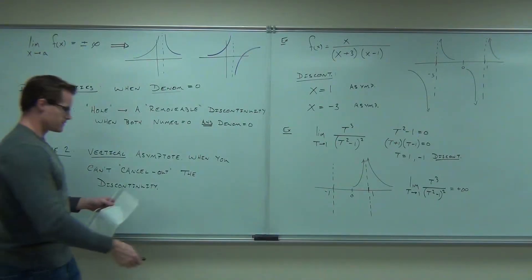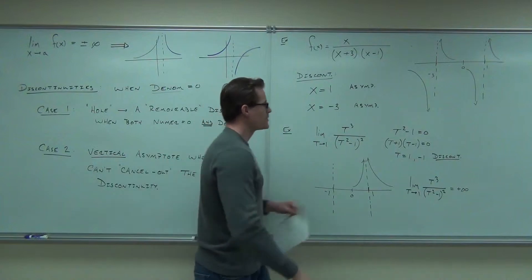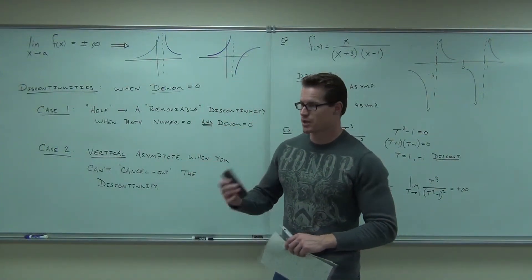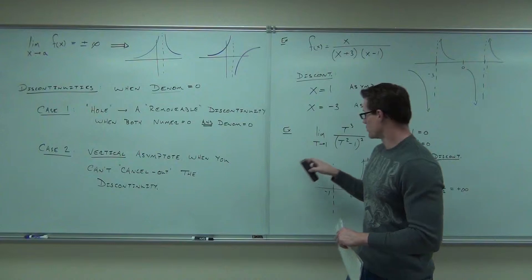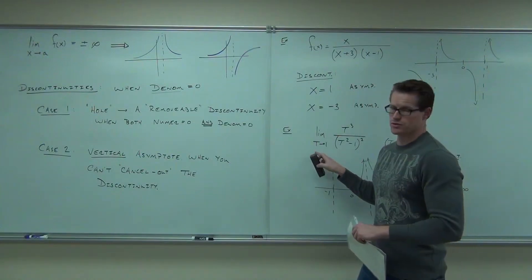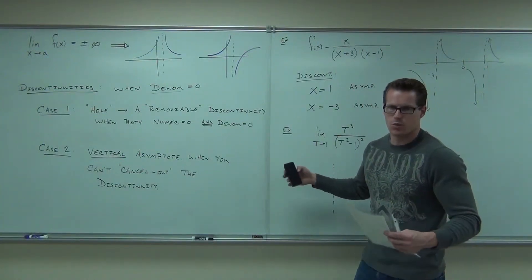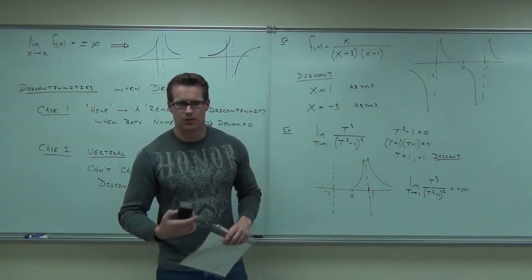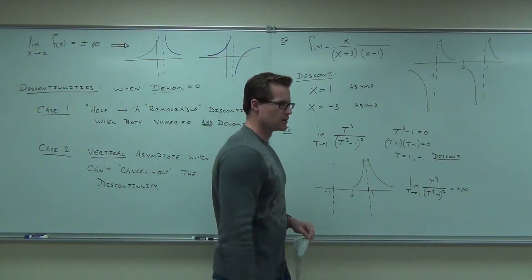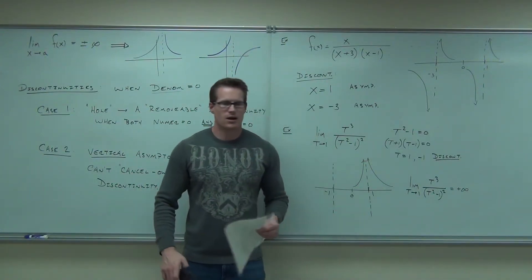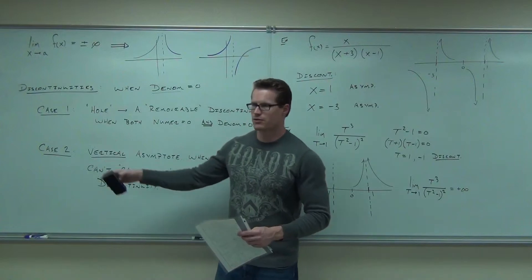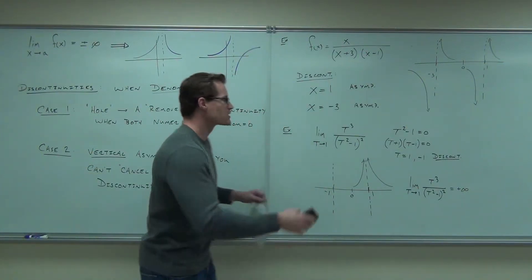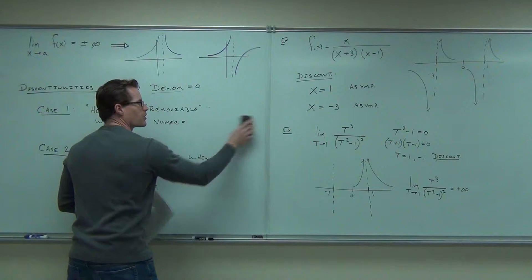Now, the next question we have to answer is: what happens with a limit if x doesn't actually go to a number? So, for instance, x goes to 1 here, right? What if we say, I don't want to go to 1, I don't want to go to 2 — I want to go to infinity. What happens to our function? Or negative infinity? That's what this next part is all about.